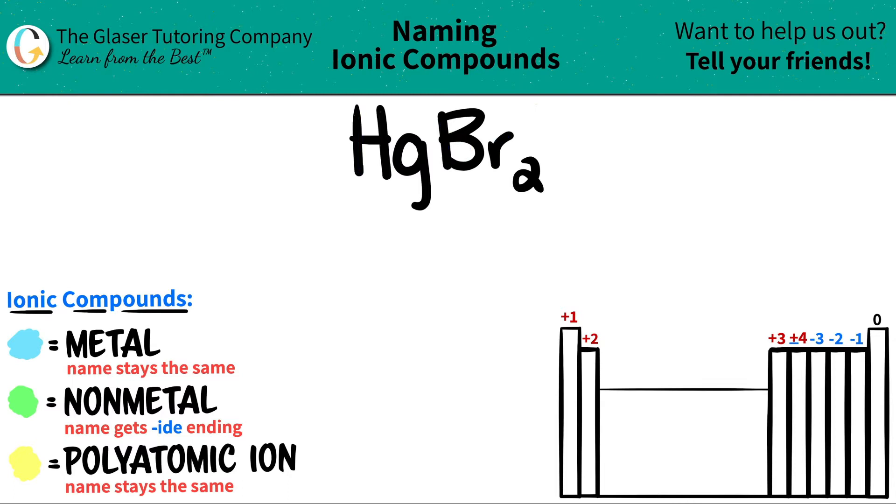Now if it's an ionic compound, one has to be a metal and one has to be a nonmetal. Hg, the mercury, is a metal because Hg is down here on the periodic table. And anything in this little box are transitional metals. So we know that mercury is a metal.